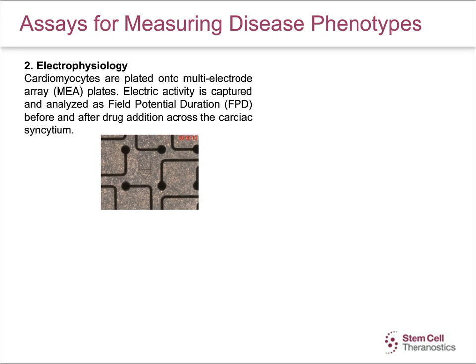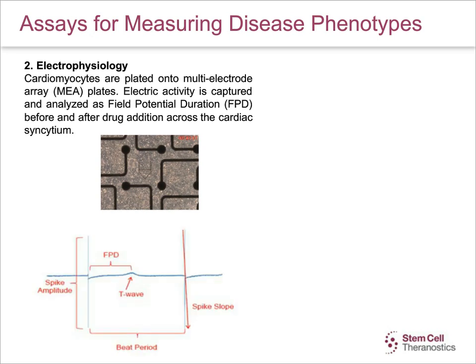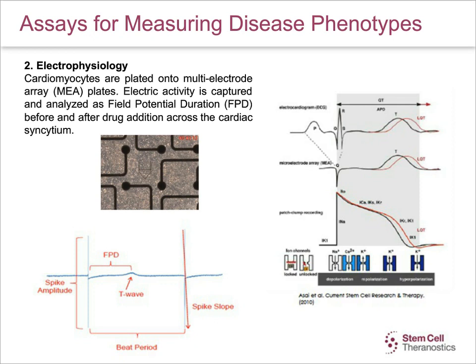This video shows beating cells that have been plated on the MEA plates, where the black lines are the electrodes visible through the microscope. The lower panel shows how data is obtained in the form of tracings. We can measure FPD, T-waves, spike amplitudes, and many other parameters using such readouts. The panel on the left shows the correlation between echocardiogram, ECG, MEA readouts, and patch clamp recordings of ion channels.